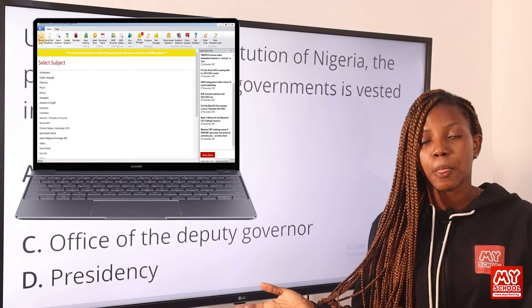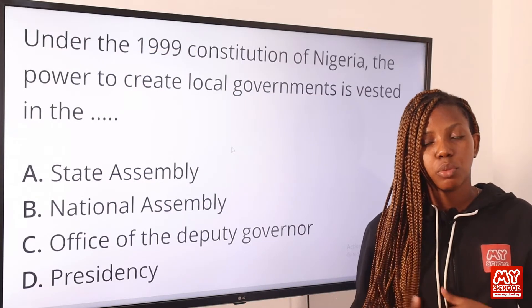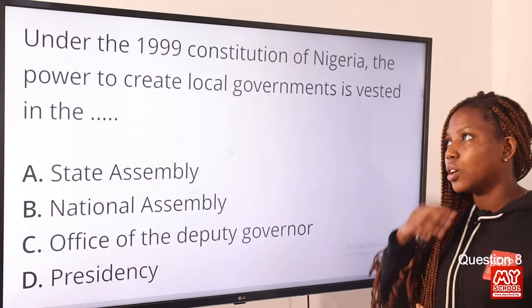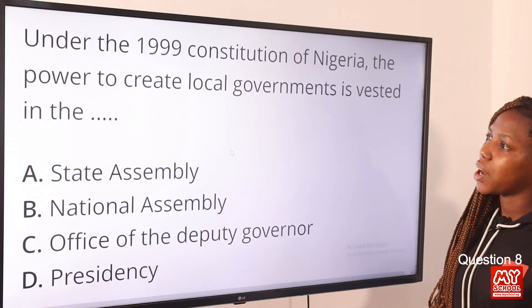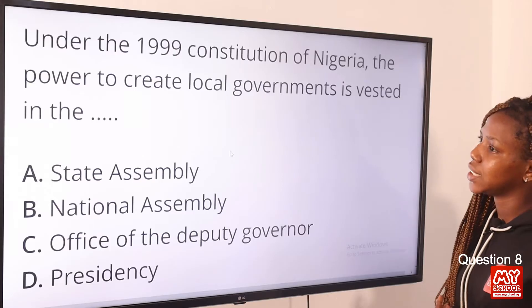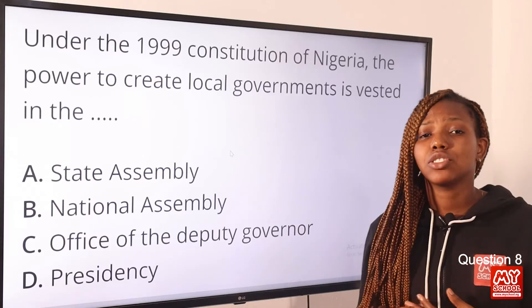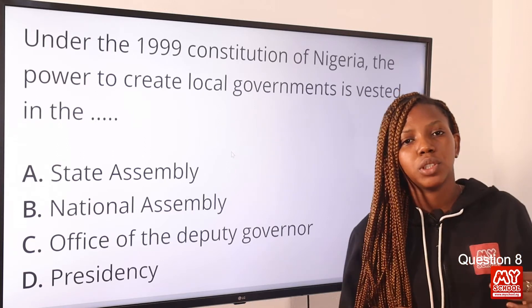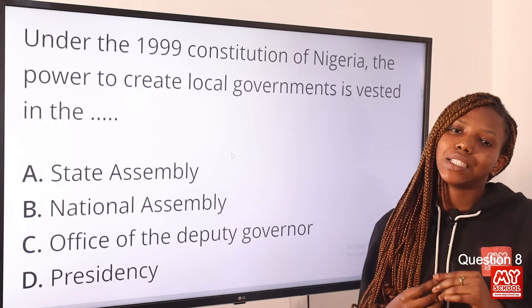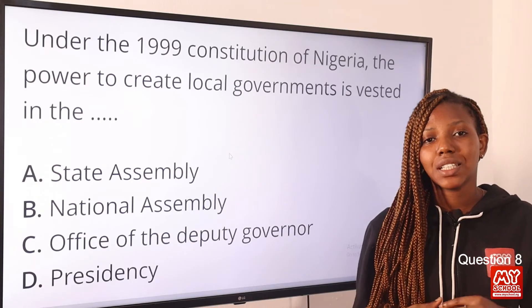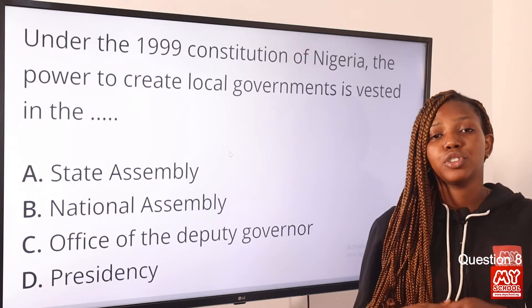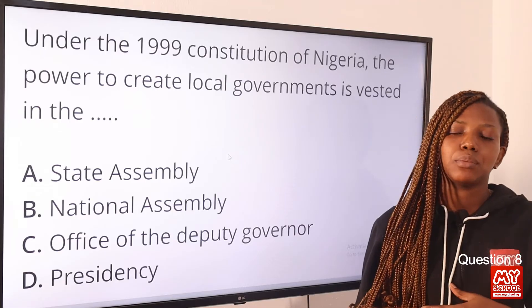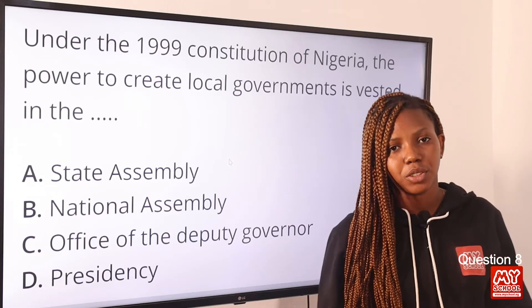Question eight: Under the 1999 Constitution of Nigeria, the power to create local government is vested in the — the answer is option A, the State Assembly. The 1999 Constitution made provisions for the creation of local governments by the State Assembly, so option A is the correct answer.